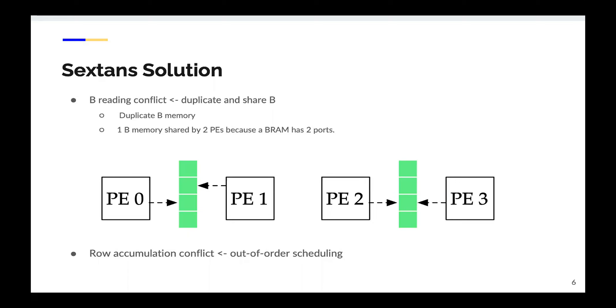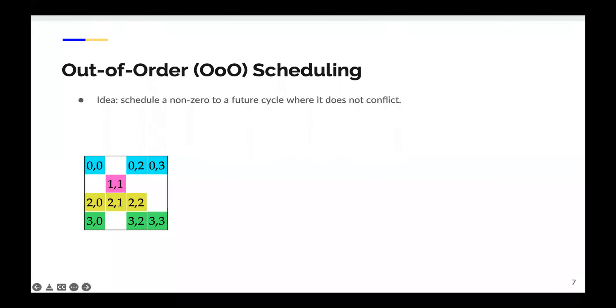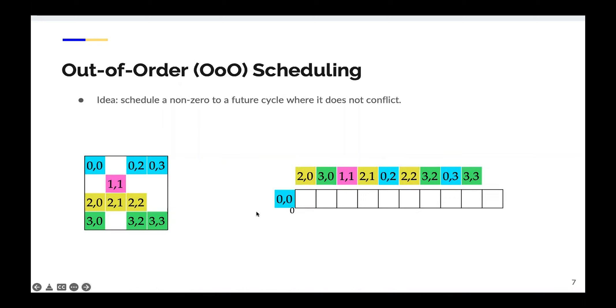To address the row accumulation conflict, we use an out-of-order schedule. The basic idea of our out-of-order scheduling is to schedule a non-zero to a future cycle where it does not conflict. For example, if we are processing the non-zeros in this sparse matrix, initially, we can safely schedule this blue element because it does not have conflict with any previous element. And for the next three elements, they are from three different rows, so they do not have a conflict. We can also safely schedule them.